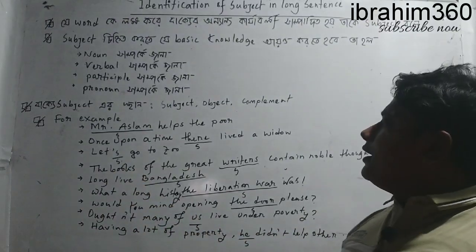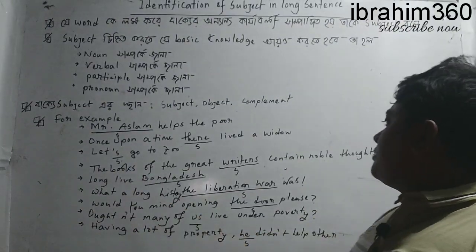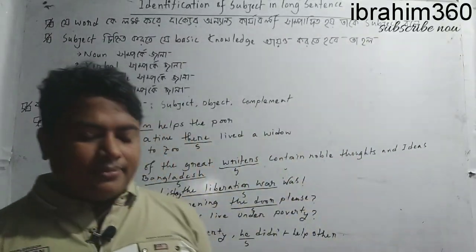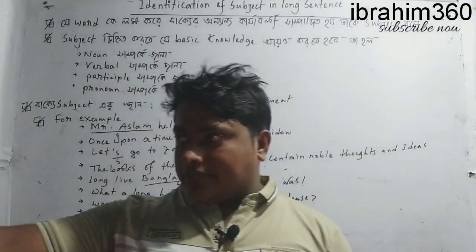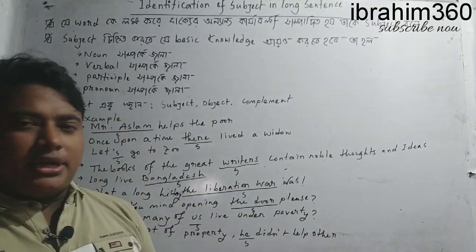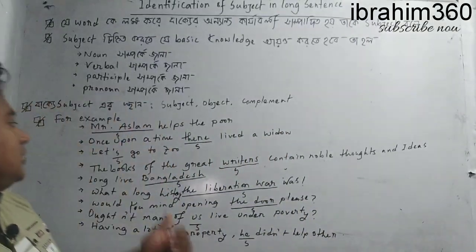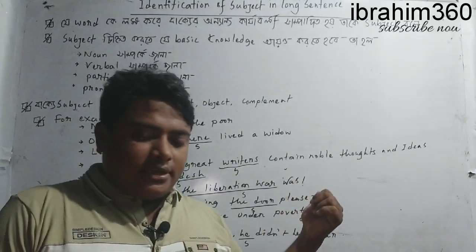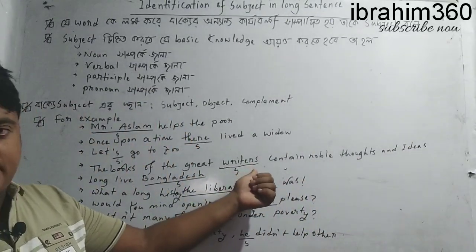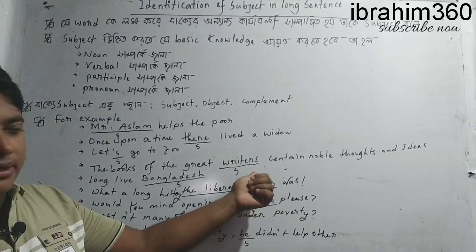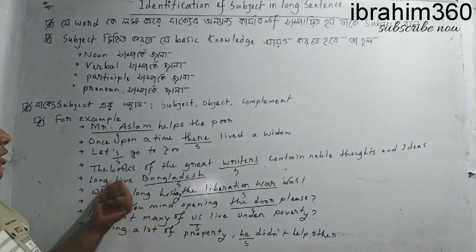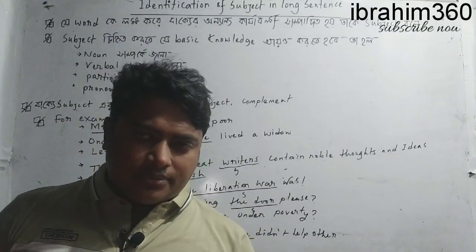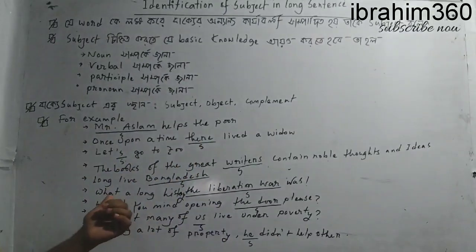For example: 'Books of the great writer contains noble thoughts and ideas.' Sometimes you have to know about subject-verb agreement to identify the subject. In 'The books of the great writers,' 'books' is the subject, not 'writers.' Also, 'Long live Bangladesh' — here 'Bangladesh' is the subject in this sentence.